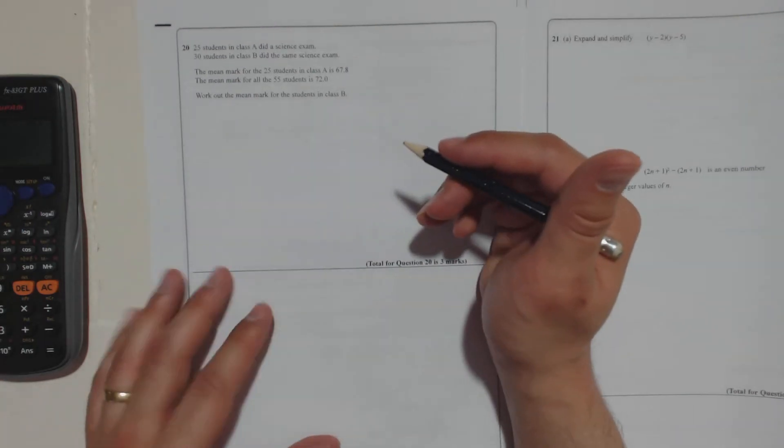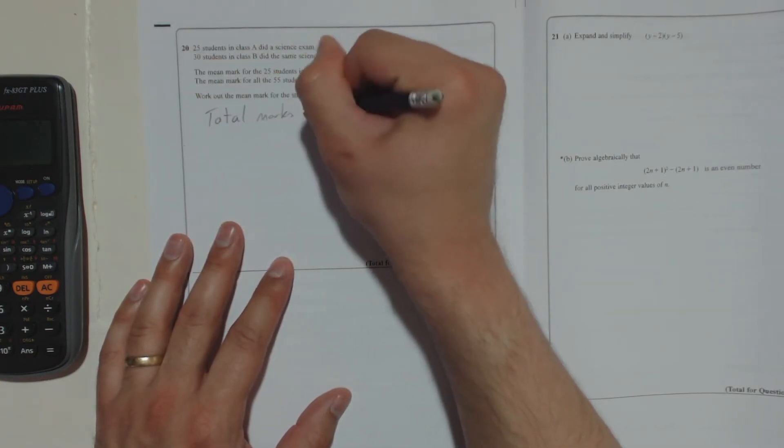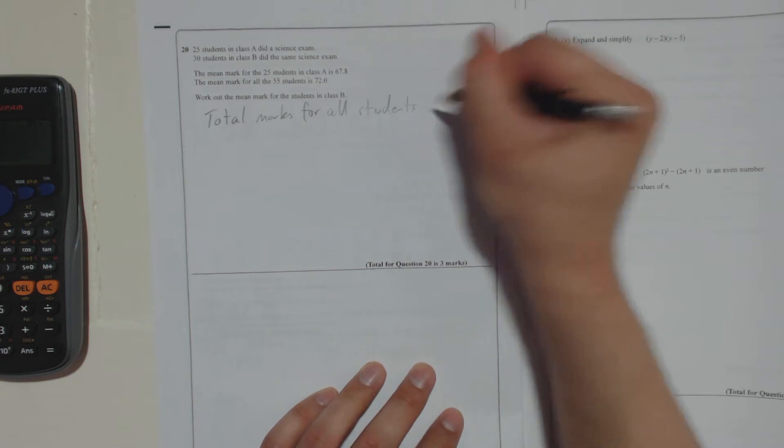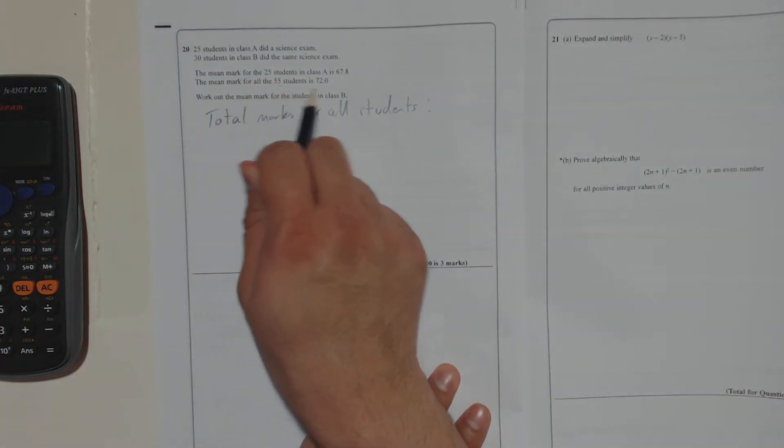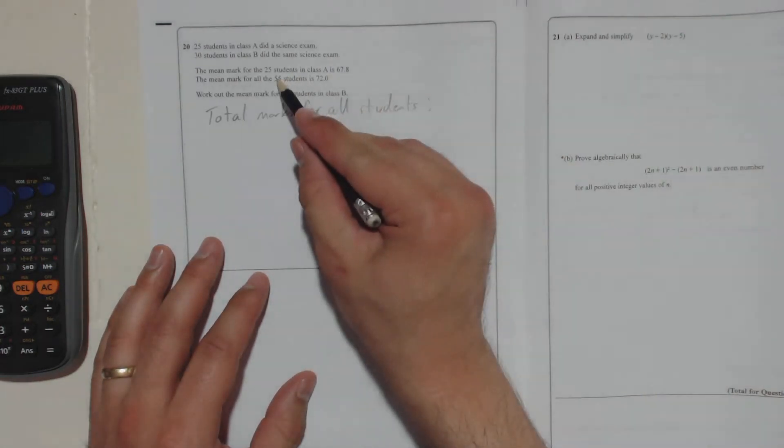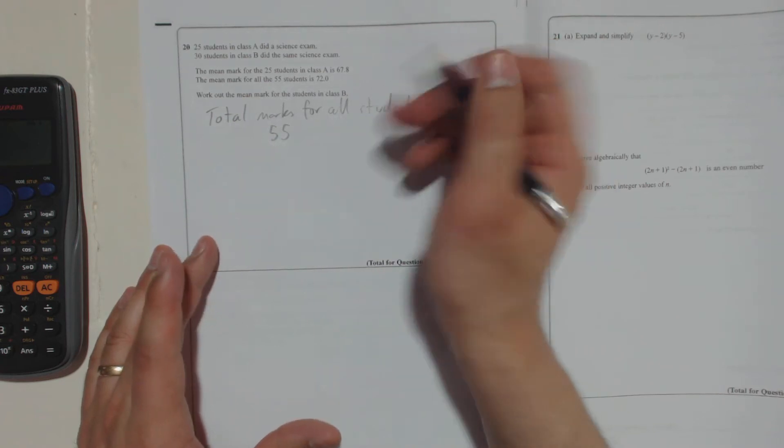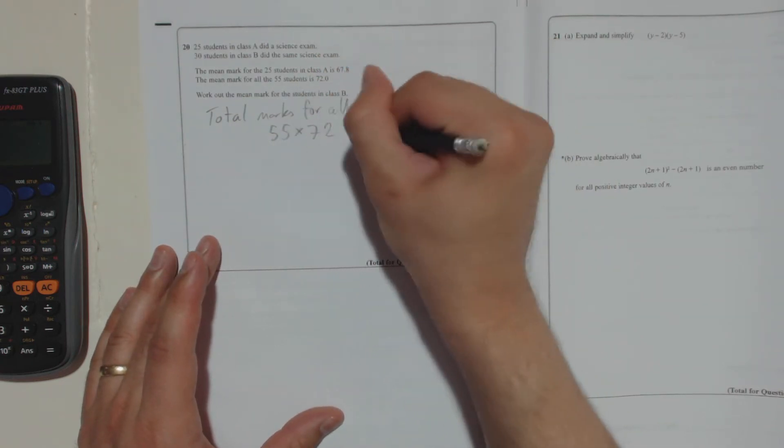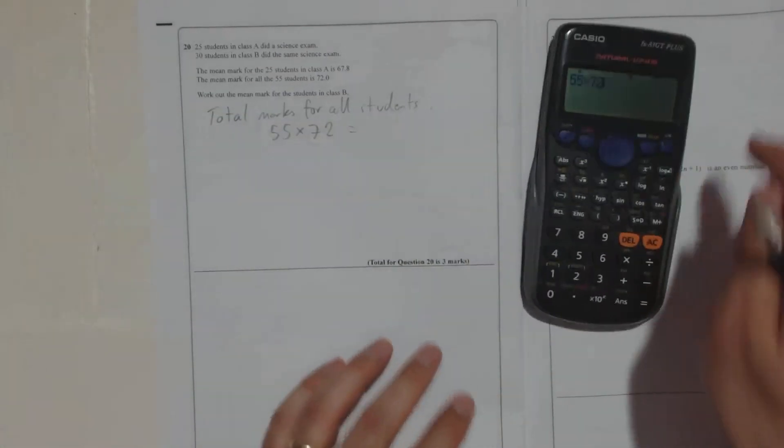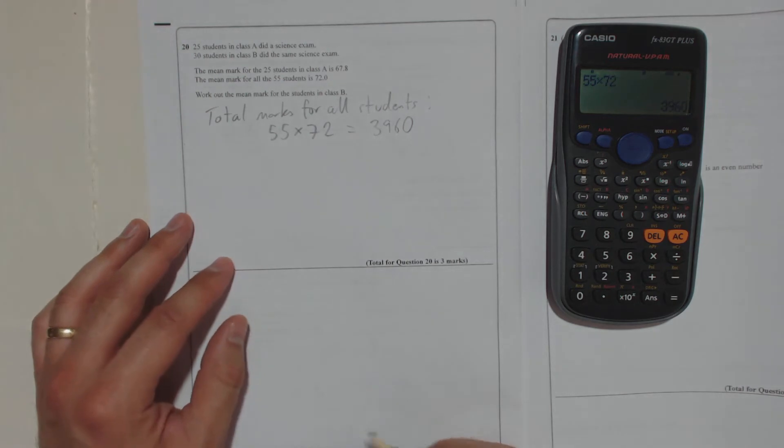So if we worked out the mean for all the students, total mark for all students—we're going to add all the marks up. The mean mark for all the 55 students is 72. That means that something divided by 55 gives 72. So if you do 55, because it's as if every student got 72, take 55 and times it by 72, you're going to get the total number of marks for the students. So 55 times 72 is 3960. That's the total marks for all the students.